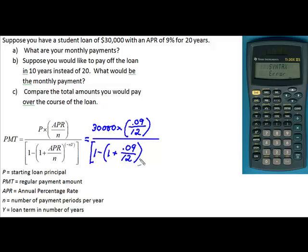Close the left-hand parentheses, all raised to, and you don't want to forget this, there is a minus sign, the number of payments per year times the number of years, which would be 20. And then I'm going to close the denominator brackets.